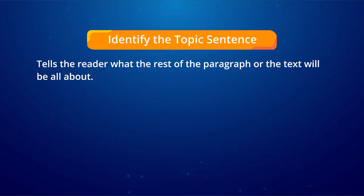How do we identify the topic sentence? A topic sentence is a sentence in the introduction that tells the reader what the rest of the paragraph or the text will be all about. For example, if the topic sentence concerns the types of endangered species that live in the ocean, then every sentence after that needs to support that subject — we cannot jump to another idea.